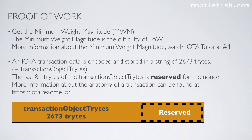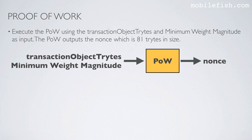The last 81 trits of the transaction object trits are reserved for the nonce. The size is 2673 and the last 81 trits are reserved for the nonce. More information about the anatomy of a transaction can be found at a specific location. Execute the proof of work using the transaction object trits and minimum weight magnitude as input. The proof of work outputs the nonce which is 81 trits in size.